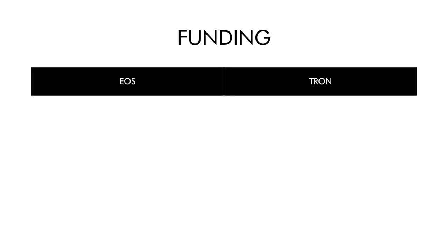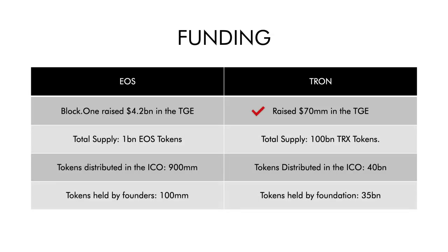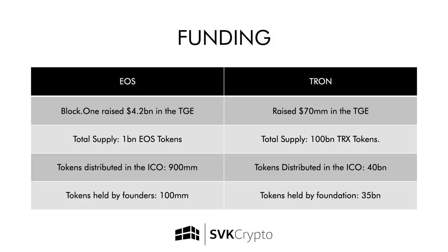Number two is funding. We believe that funding is very important in order to make sure that the smart contracting platform of your choice maintains its edge over time. Both these protocols raised money in an ICO. TRON raised $70 million in their ICO and EOS, or Block.one, raised $4.2 billion in their year-long ICO. Because they both use DPoS as their consensus mechanism, part of their distributed nature comes from how dispersed the token supply is, which is why Block.one opted for a year-long ICO to get their tokens in the hands of as many unique token holders as possible.